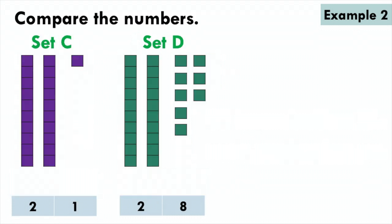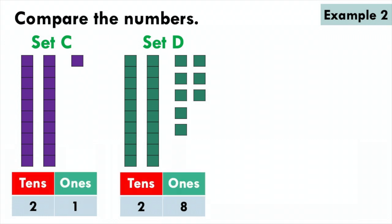Let us look at another example. Now I have set C and set D. Set C has 21 cubes and set D has 28 cubes. So I can split these numbers into tens and ones: 21 has 2 tens and 1 one, and 28 has 2 tens and 8 ones.